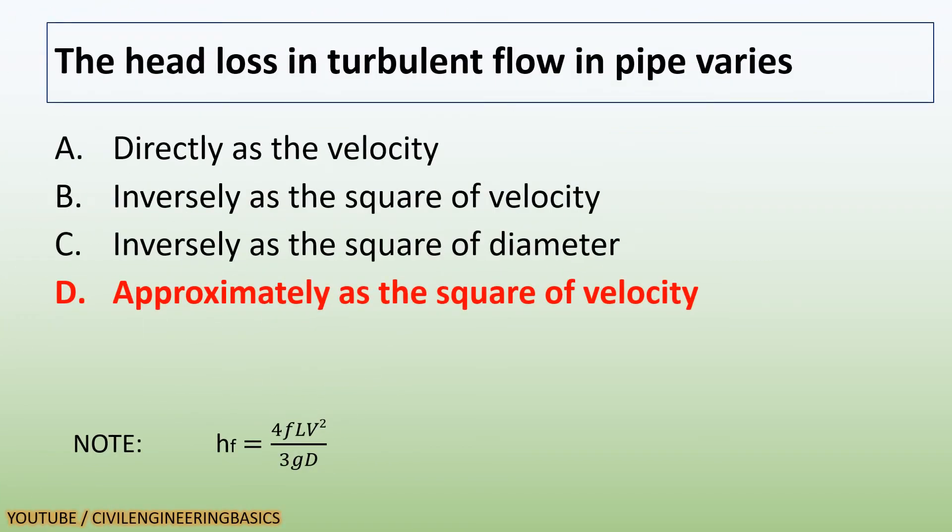The head loss in turbulent flow in pipe varies approximately as the square of velocity.